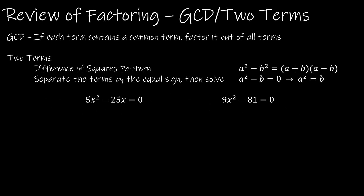The first thing that you should do, no matter how many terms you have, is to look for a greatest common divisor — a factor that you can pull out of all of the terms of your polynomial. So for instance, let's look at my two examples below. In my first example I have 5x squared minus 25x. Both of those have a factor of 5 and also a factor of x, so I can take out a greatest common divisor of 5x.